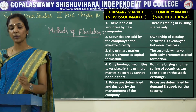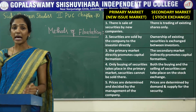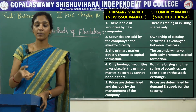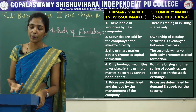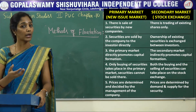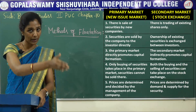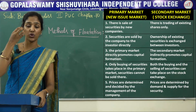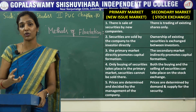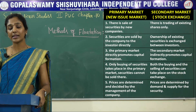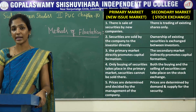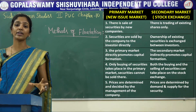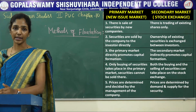In the primary market, only buying of securities takes place. But in the secondary market, both buying and selling of securities take place. The price of securities in the primary market is determined by the management of the company. Whereas in the secondary market, the price of securities is determined by demand and supply for the securities. So these are all the differences between primary market and secondary market.